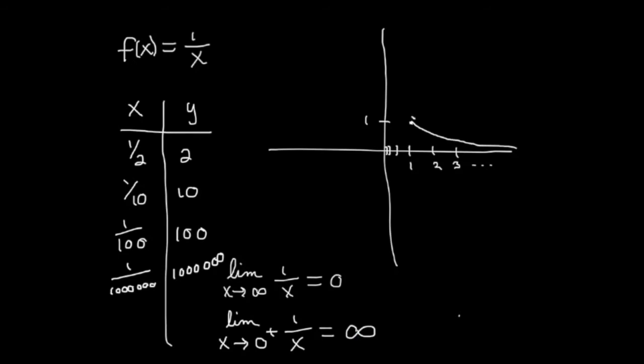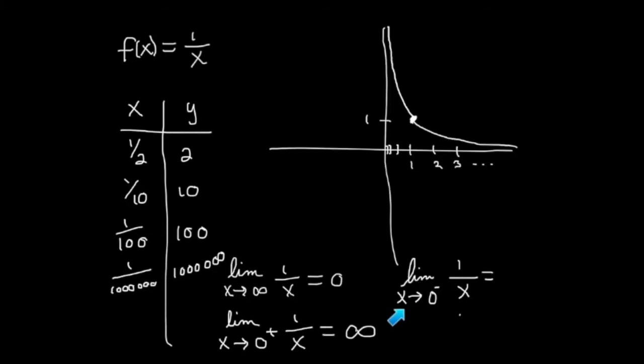As the x's get smaller, the height goes up to infinity. Now let's consider the limit as x approaches zero from the left side. We can actually use the work we've already got written down here. Negative a half, negative a hundredth, negative a millionth.